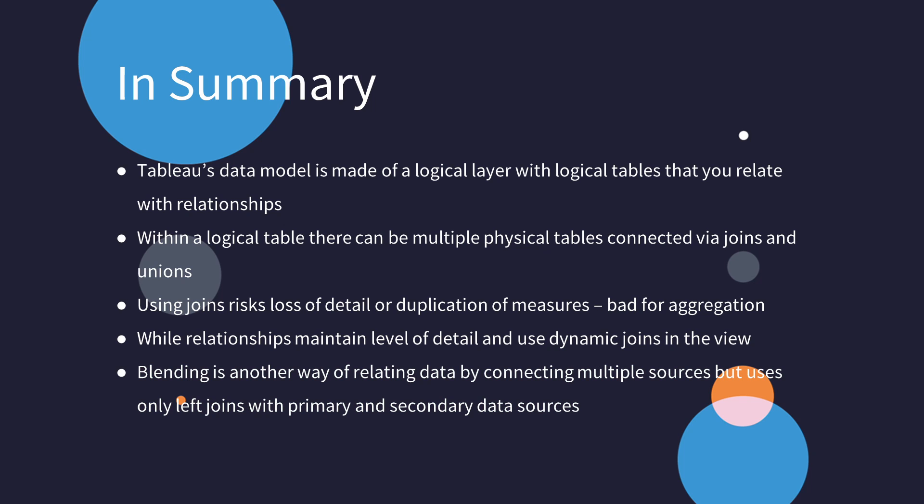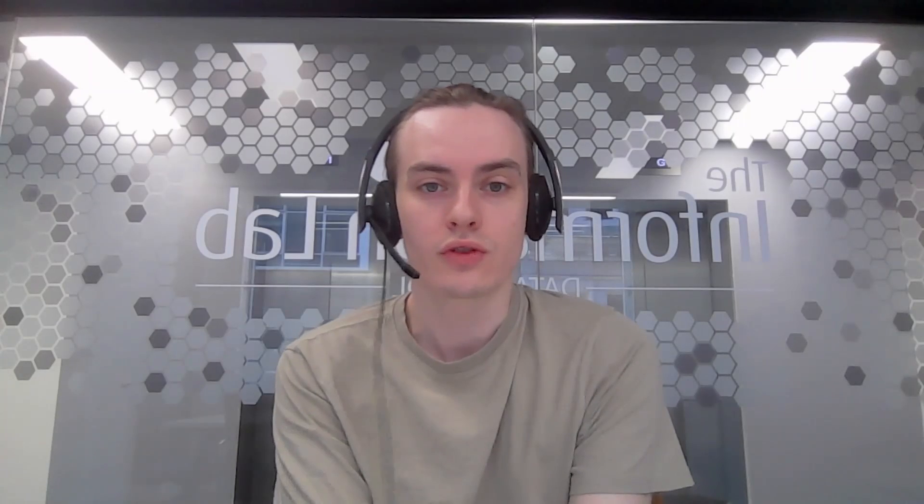Blending was the final way of connecting data we looked at. We saw that we could make a new connection on each worksheet, but these connections were all limited to the functionality of left join behavior. Blending may not be performant or server friendly as you cannot publish blended data sources, but it has its place as a great tool for data exploration — trying out different connections to see how best your data could come together without having to keep returning to the data pane.